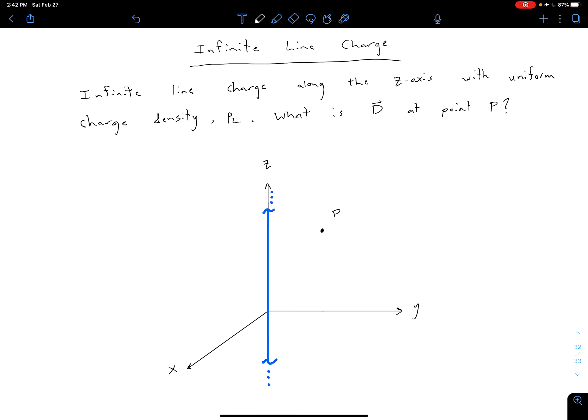The next case we're going to consider is our infinite line charge. So to be consistent with how we looked at it before, let's say that this infinite line charge is along the z-axis and it has uniform charge density rho sub l. So we want to figure out what is D at some arbitrary point P.